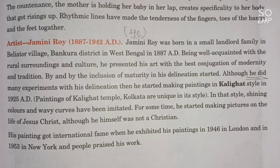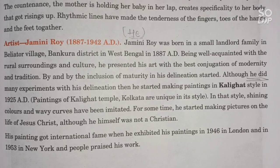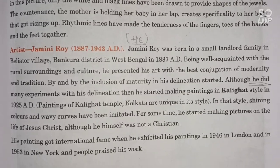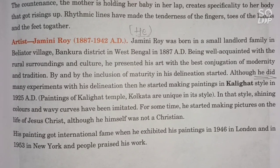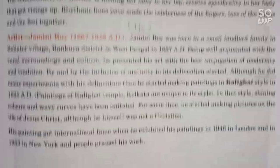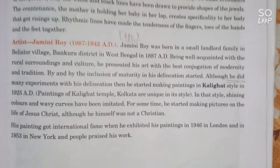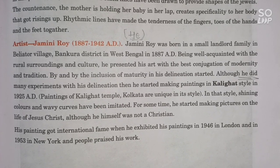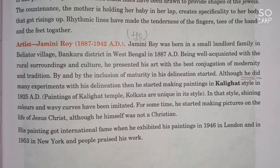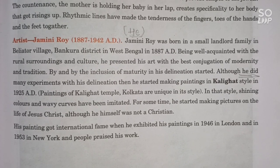In 1925 AD, he began painting in the style of Kalighat Temple, Kolkata, which is unique in style with shining colors and wavy curves. These waves are continuous without a stopping point — rhythmic lines flowing naturally. Rhythmic lines are seen in the majority of his paintings. For some time he also started making pictures on the life of Jesus Christ, although he himself was not a Christian.